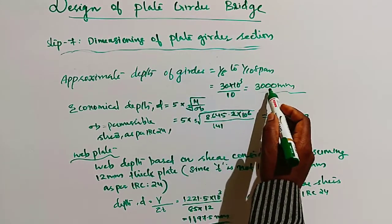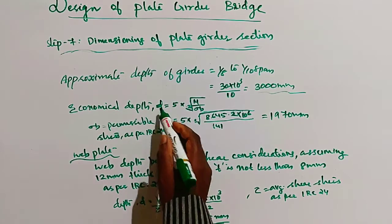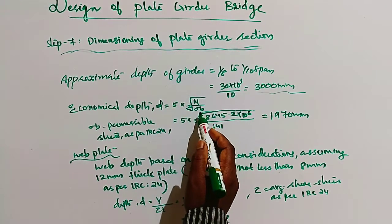So the answer is 3000 mm. Then comes the economical depth D. We have an equation: 5 times the cubic root of m divided by sigma b.